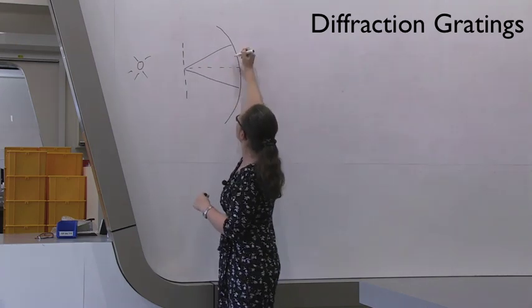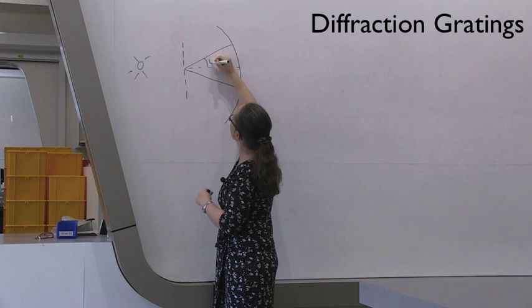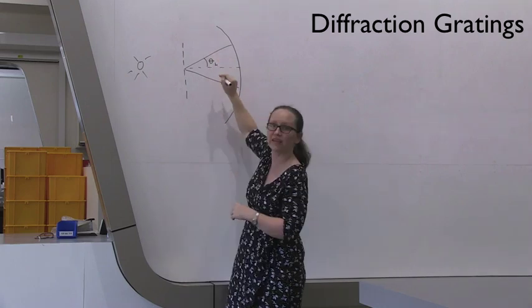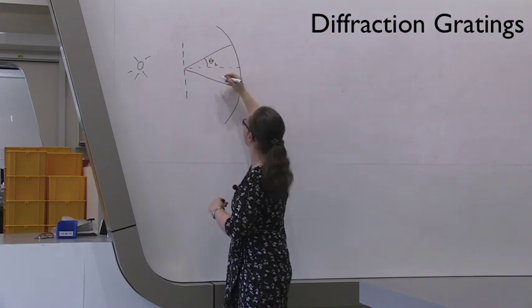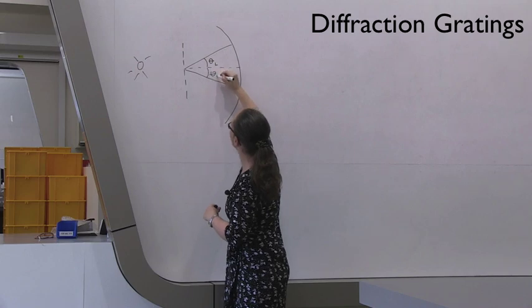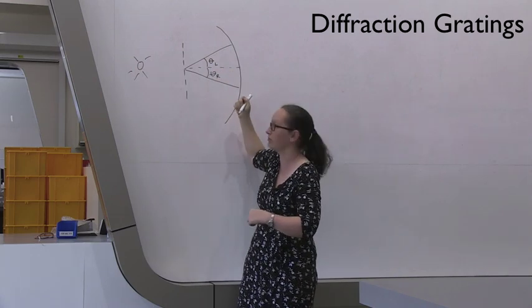So you might see one bright line up here, and we'll call this angle theta l for theta left, and you'll see another bright line down here. We'll call it theta r for theta right.